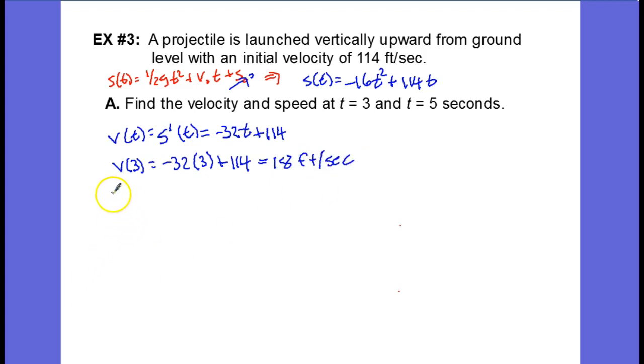v of 5 is negative 32 times 5 plus 114, and that will be equal to negative 46 feet per second.